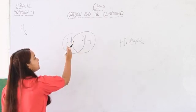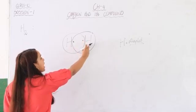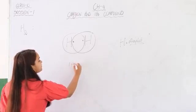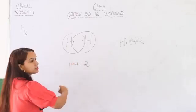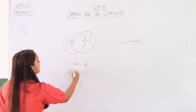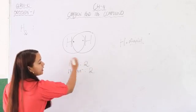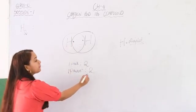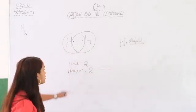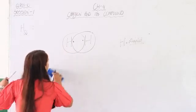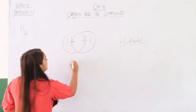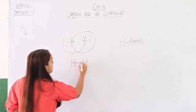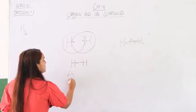Just as one pair of shoes has two shoes, one pair of electrons has two electrons. Here we can see one shared pair of electrons, and one pair of electrons gives rise to a single bond. So the bond between two hydrogen atoms — H₂ — is a single covalent bond.